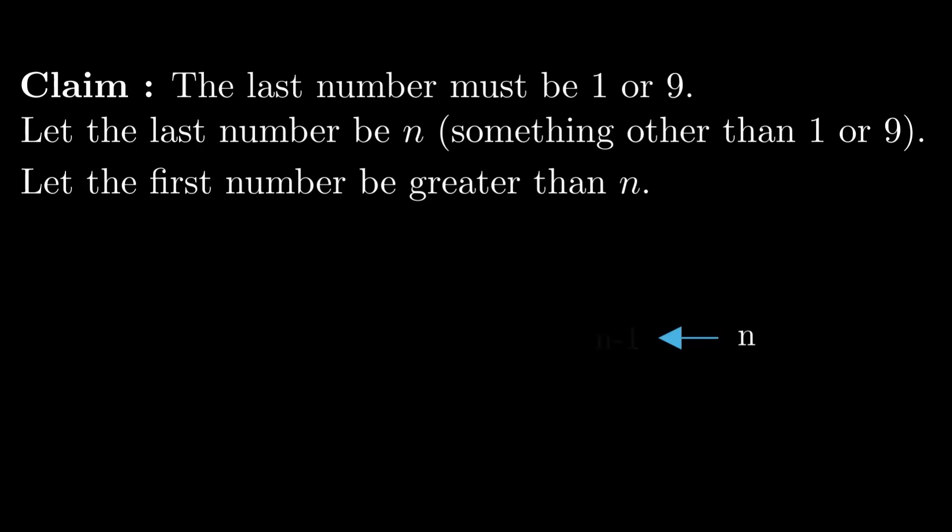Since n is the last number, n-1 must lie to its left. Since the first number is greater than n according to our assumption, n-1 cannot be the first number in the permutation. So either n or n-2 must lie to the left of n-1. Since n is the last number, n-2 must lie to the left. Similarly, n-3 must lie to the left of n-2, and so on. We can continue like this indefinitely, but the smallest number in the permutation is 1, so we cannot continue like this indefinitely. Therefore, this is a contradiction.